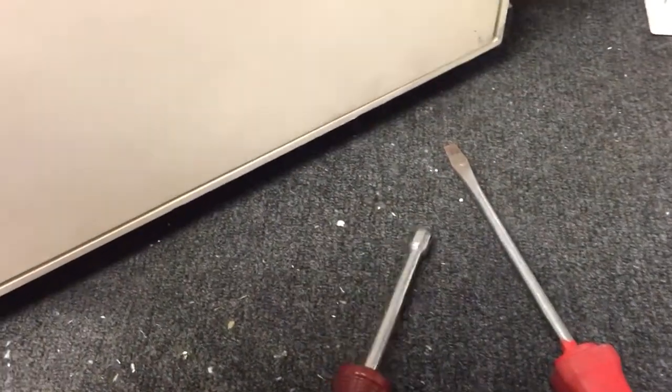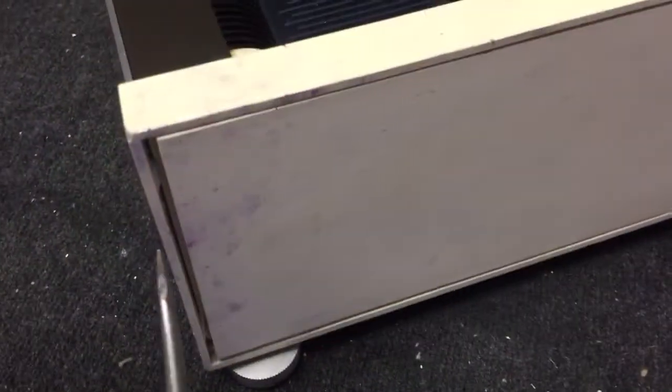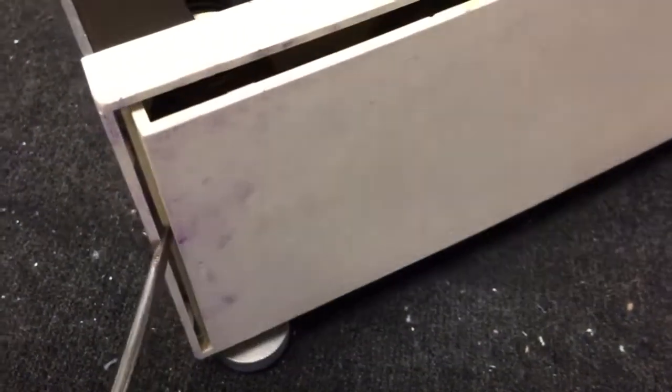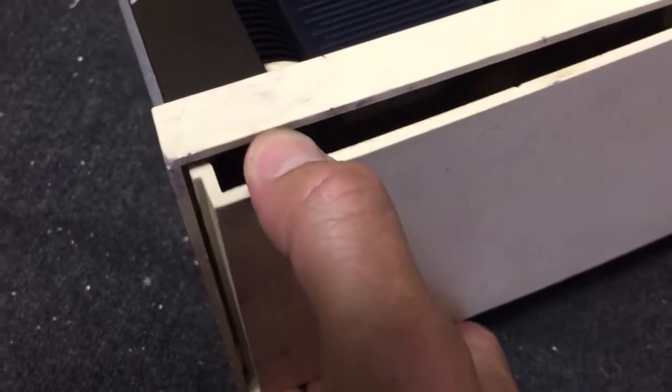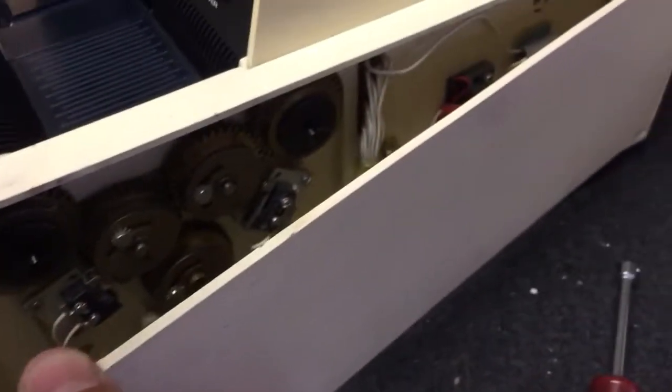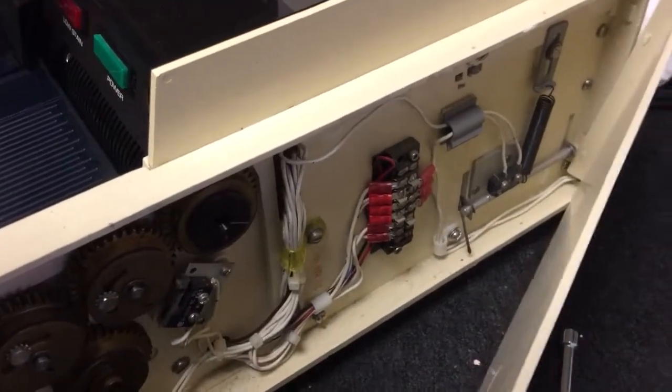All you need to do is take your screwdriver and pop it into the side of the instrument right here and pry forward. You'll see that it comes out. Grab it with your fingers and pull the plate forward kind of like a book. You want to open it up just so the back piece will clear and come free of that little pin in the rear.